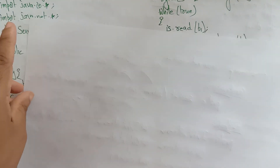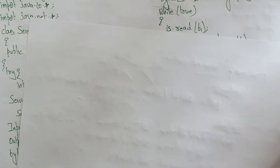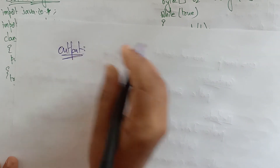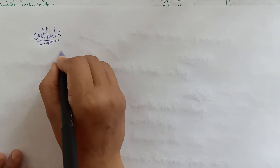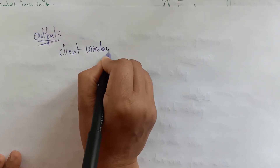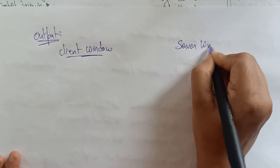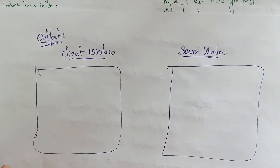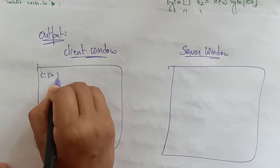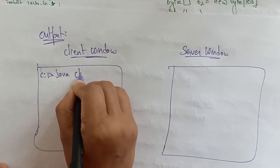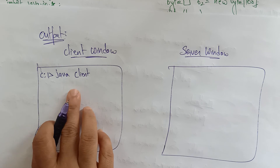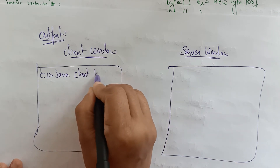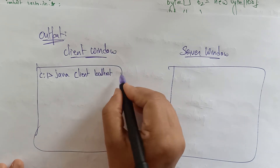Now let's execute this program on the command prompt — you can also use Eclipse's output window. Open two command prompt windows side by side: one is the client window and one is the server window. Minimize and keep them side by side on your screen. In the client window, run: java Client localhost 2000 — where localhost is the server address and 2000 is the port number.